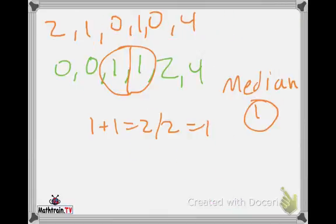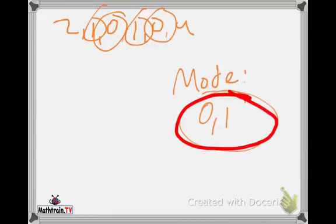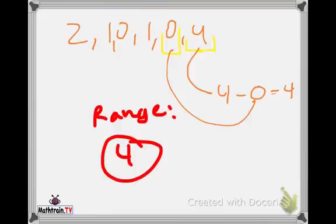The median is one, right over there. The modes are zero and one, right over here. And then last, the range, four, right there.